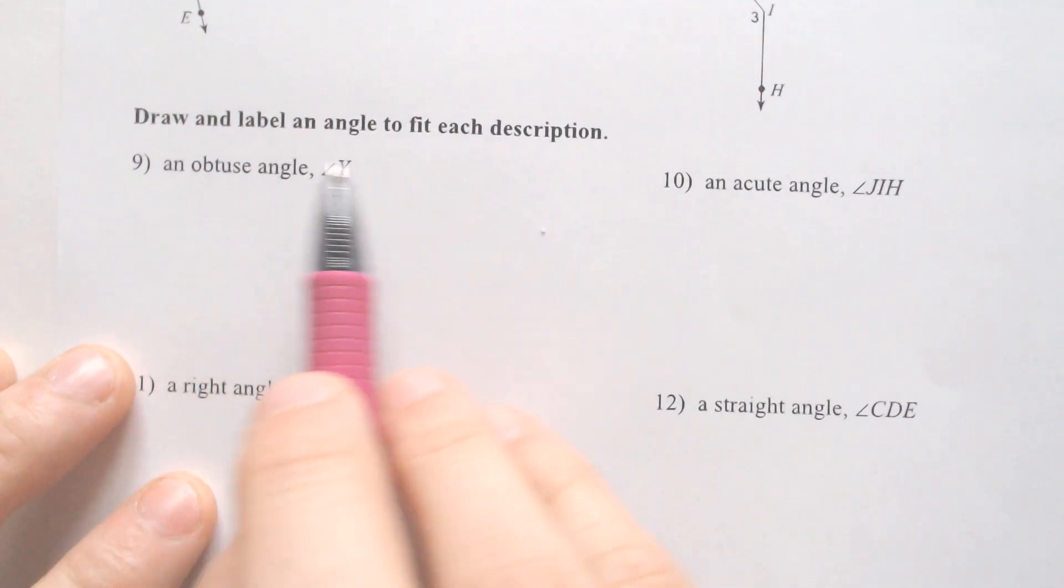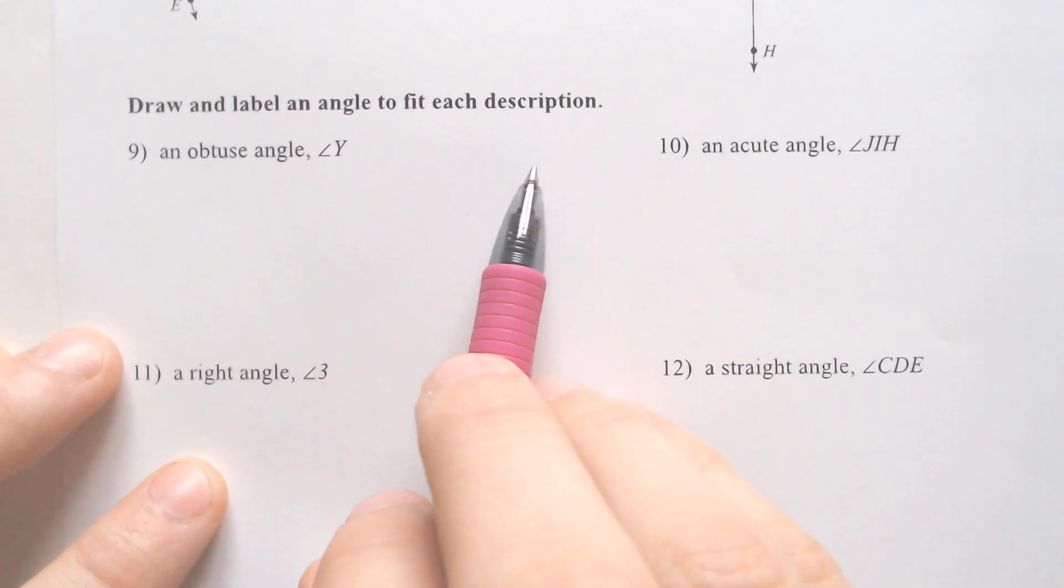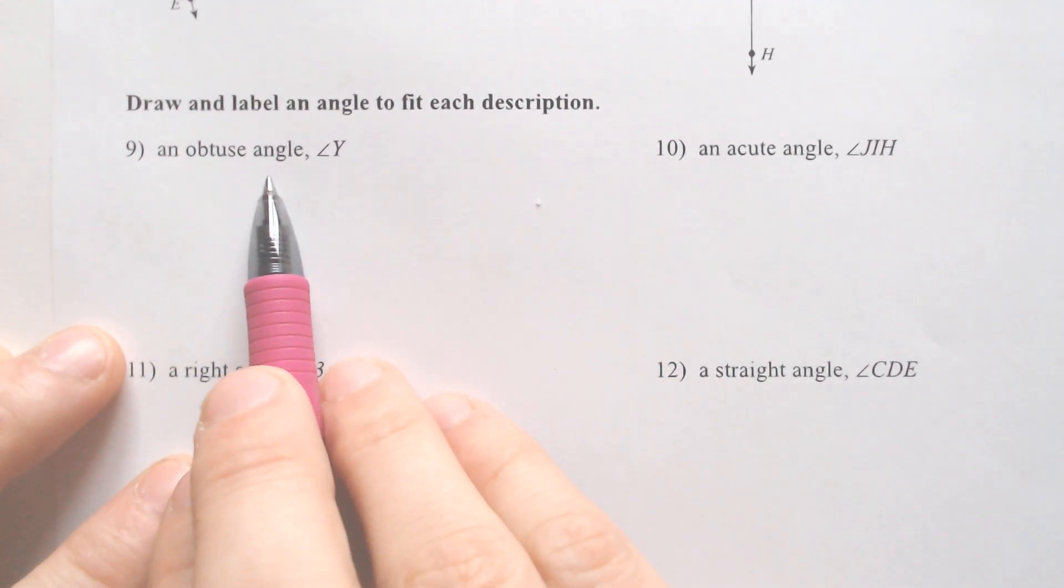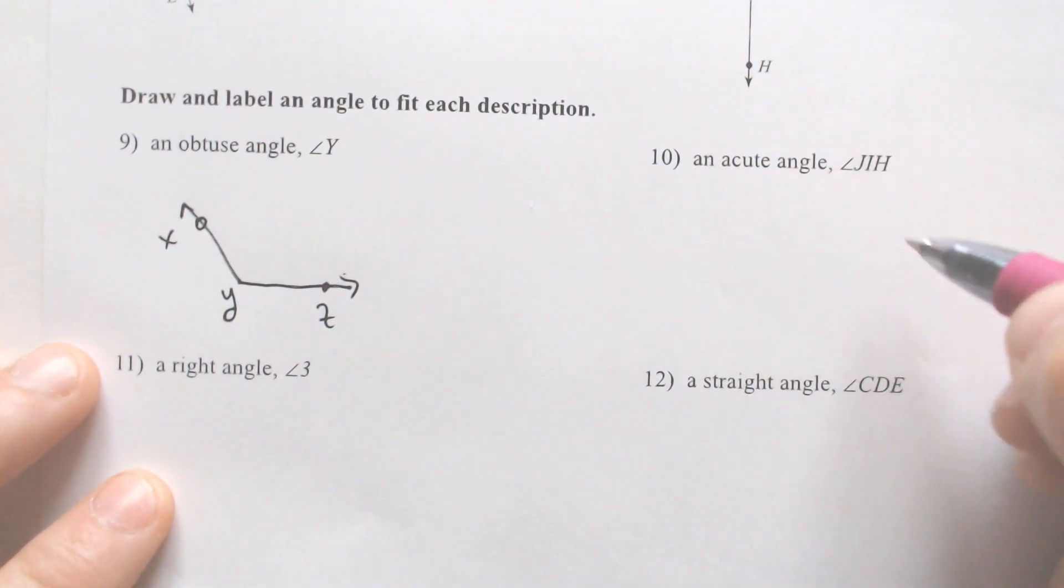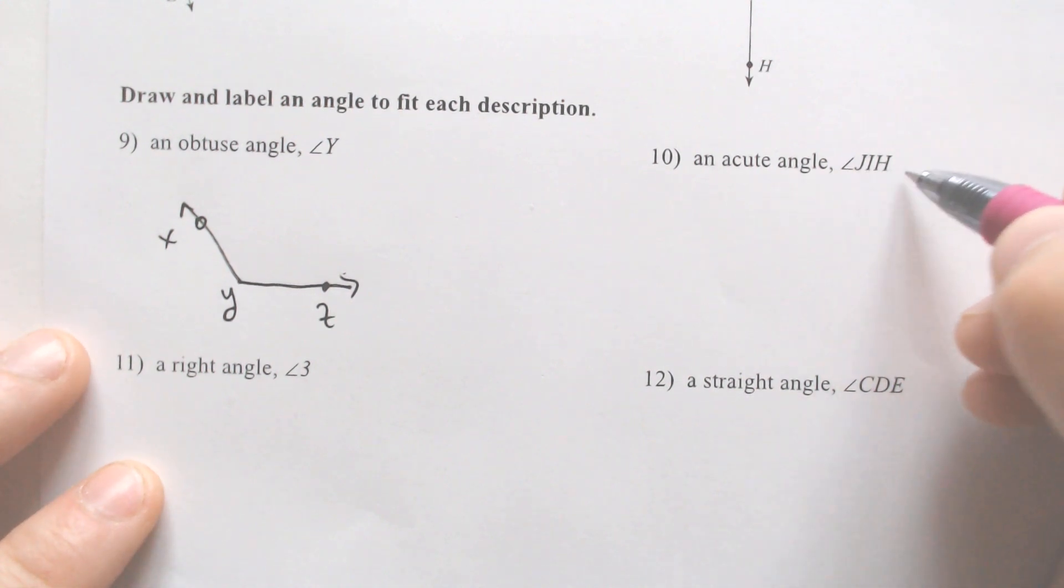Draw and label an angle to fit each description. An obtuse angle, angle Y. Okay, so an obtuse angle is one that is bigger than 90, and we would call it Y in the middle. You could throw in some other things like another X and a Z if you wanted to, but you didn't have to.